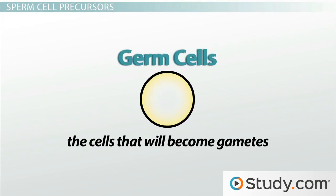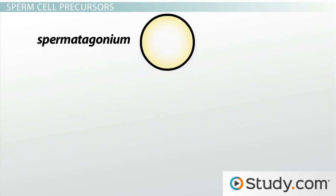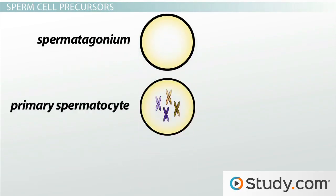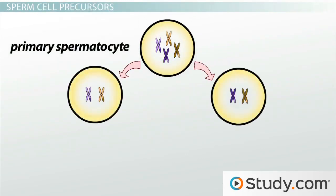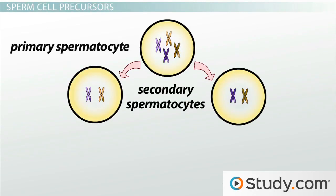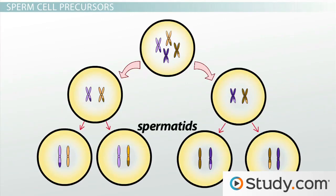The germ cells found in the testes are called spermatogonia. Every day, somewhere around 25 million spermatogonia enter meiosis and become primary spermatocytes. After the first meiotic division, the cells double in number and are called secondary spermatocytes. Once the second meiotic division is completed, but before the haploid cells have had a chance to differentiate into actual sperm, the cells are called spermatids.